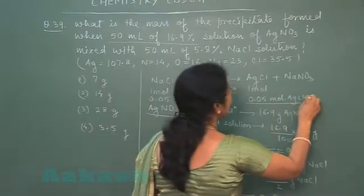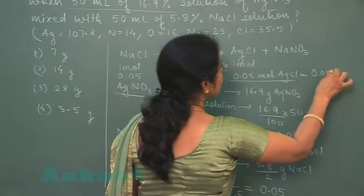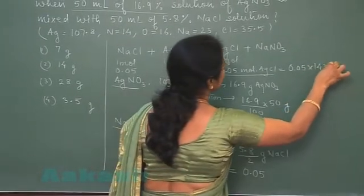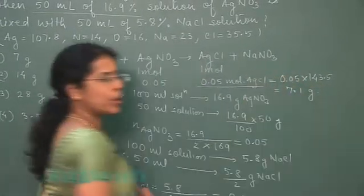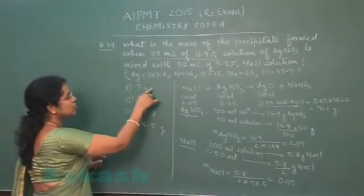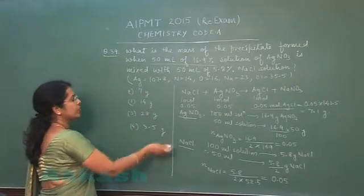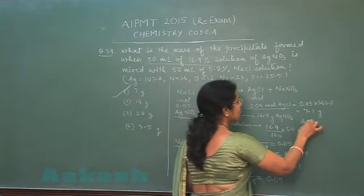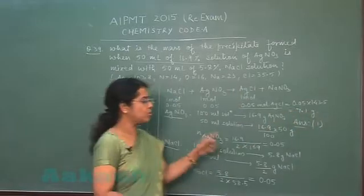The product formed will be 0.05 mole of AgCl. The mass of 0.05 mole equals 0.05 multiplied by molecular mass 143.5, which gives approximately 7.1 grams. Looking at the options — 7 g, 14, 28, and 3.5 — the first option is correct. The answer to this question is the first option.